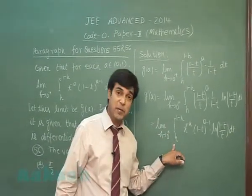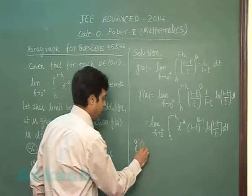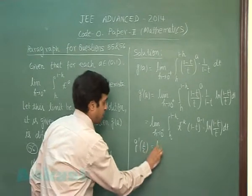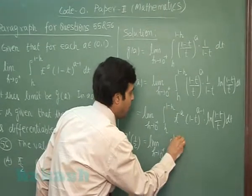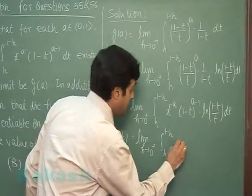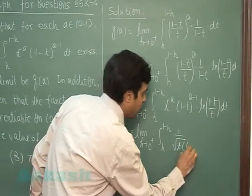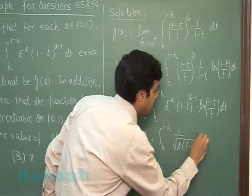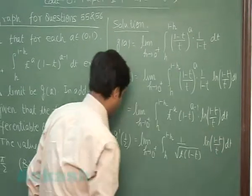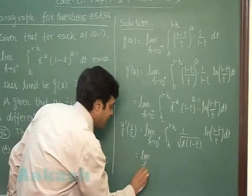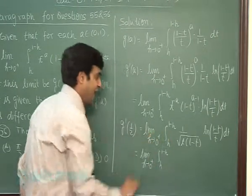Now if I apply property a+b minus x in this term, we get after substituting the value 1/2... by property: integral h to 1-h...